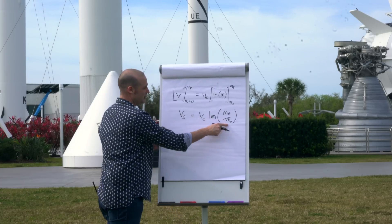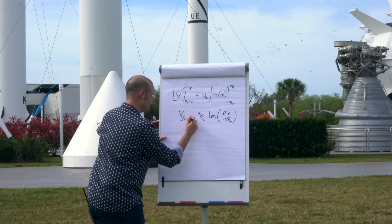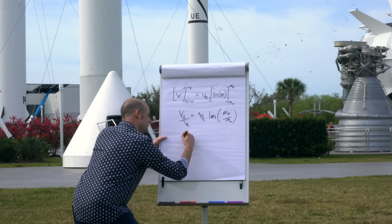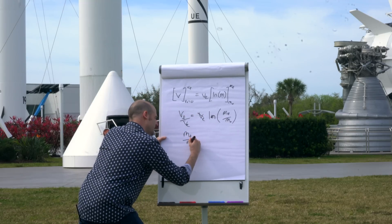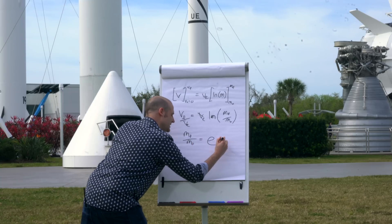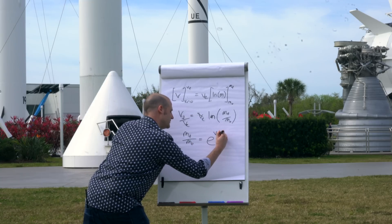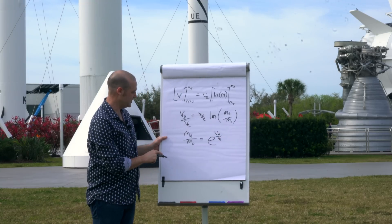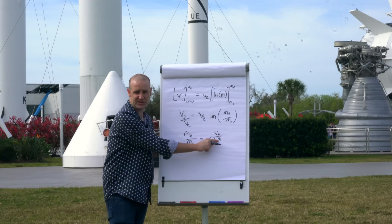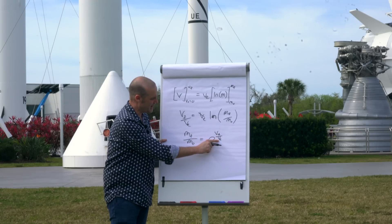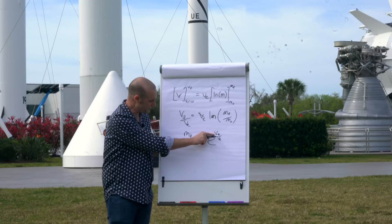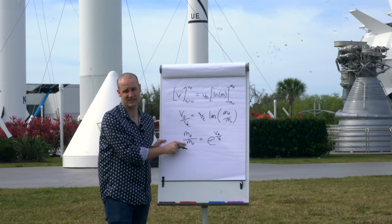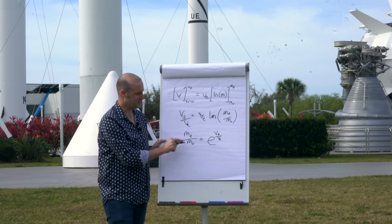Natural log means that if I move this over here, natural log means that e to the power of this, so that means m final divided by m0 equals e to the power of v final divided by ve, and that is your rocket equation, which will tell you for whatever velocity you can spit your exhaust out at, and whatever velocity you want to finally be traveling, this is the ratio of final payload to the total amount of mass that you originally started with before you launched.